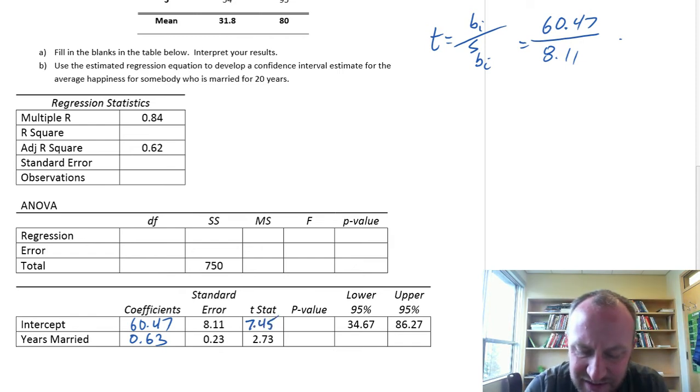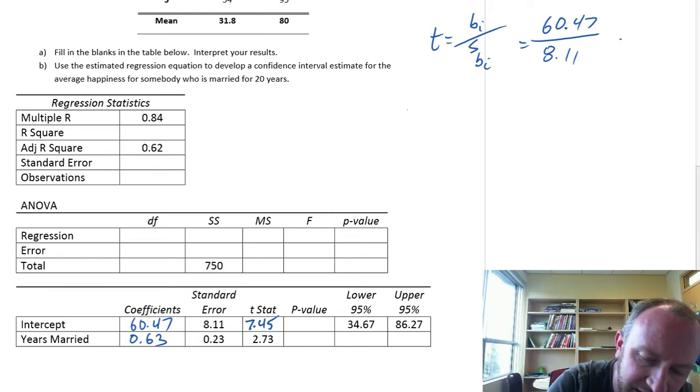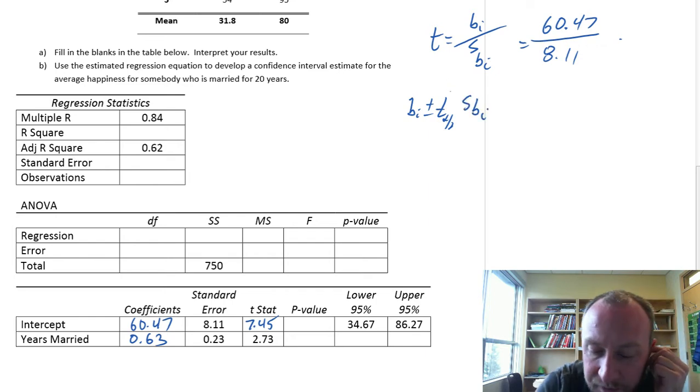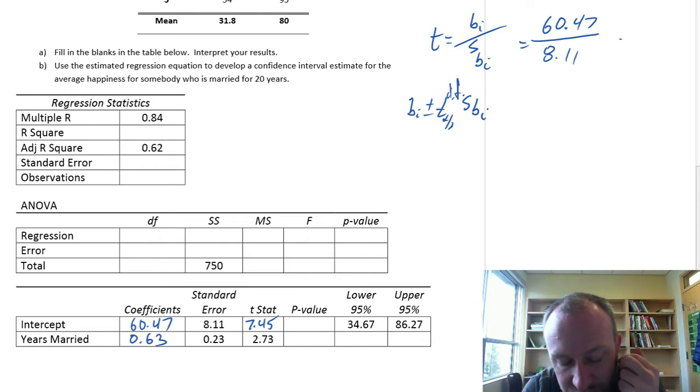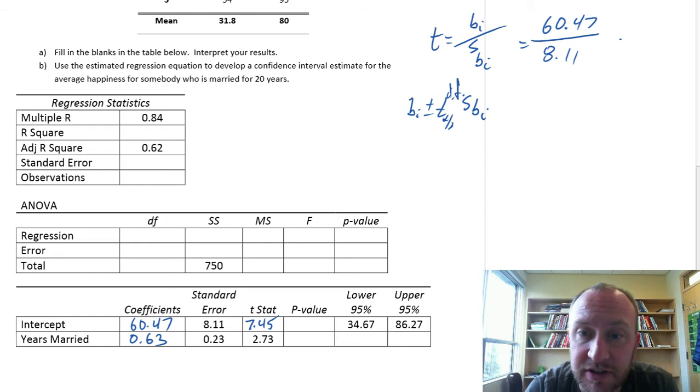We can get our p-values. Let's get our confidence interval estimates first. So that one is going to be, again I'll write out the formula, plus or minus critical value, we don't know that yet, times the standard error. So we do need that degrees of freedom. And that's going to come from the ANOVA table, which we need to figure out as well.